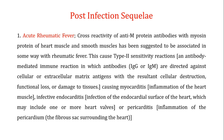During acute rheumatic fever, when these anti-M protein antibodies bind with the myosin protein of the heart, they can cause different conditions. One of the conditions is myocarditis, which is actually the inflammation of the heart muscles. This inflammation of the heart muscle is a consequence of the cross-reactivity of the anti-M protein antibodies with the myosin protein.